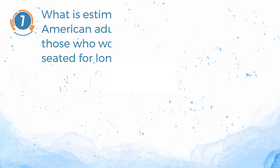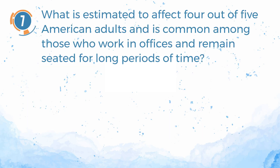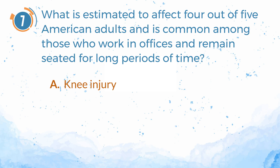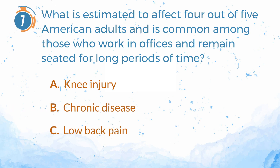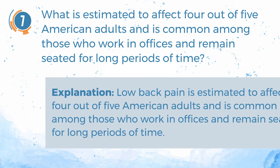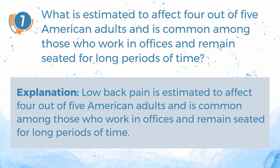Number 7. What is estimated to affect 4 out of 5 American adults and is common among those who work in offices and remain seated for long periods of time? A. Knee injury. B. Chronic disease. C. Low back pain. The answer is C. Low back pain. Explanation: low back pain is estimated to affect 4 out of 5 American adults and is common among those who work in offices and remain seated for long periods of time.